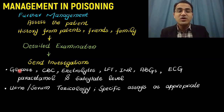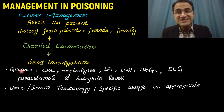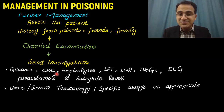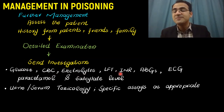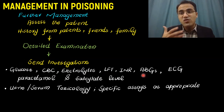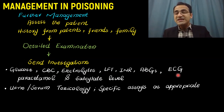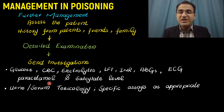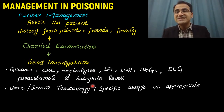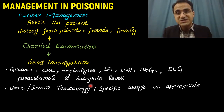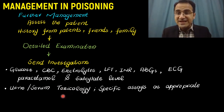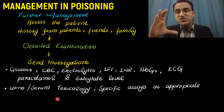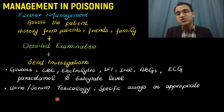Send investigations: serum glucose, as hypoglycemia can cause coma; CBC; electrolyte imbalances; LFTs; INR; and ABGs to look for acidosis. ECG must be performed to rule out arrhythmia. Paracetamol and salicylate levels can be checked if you suspect those poisonings; otherwise, urine and serum toxicology screen is performed to look for specific poisons in the urine and blood.